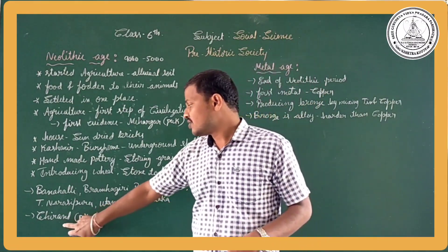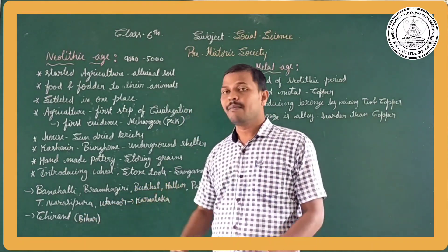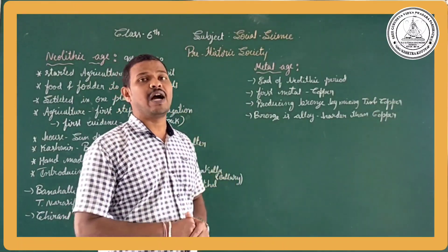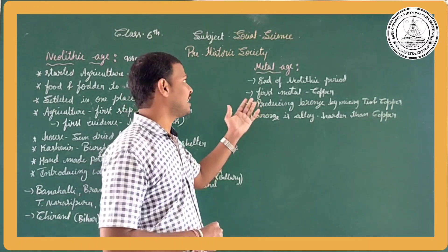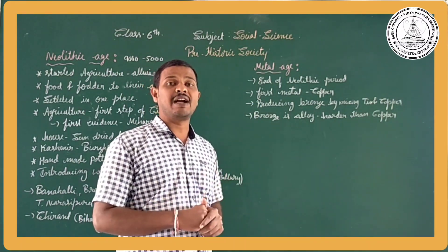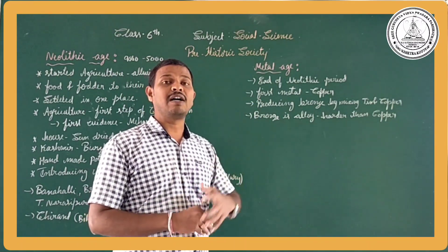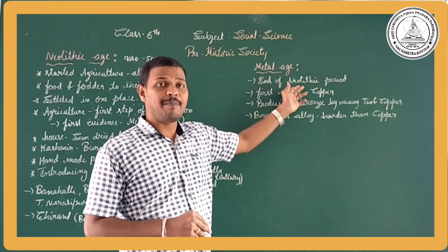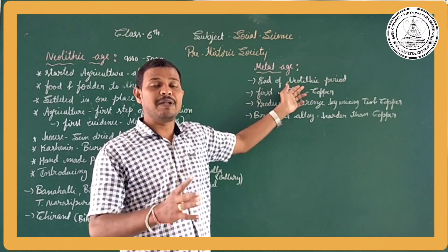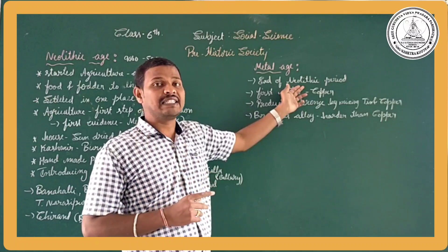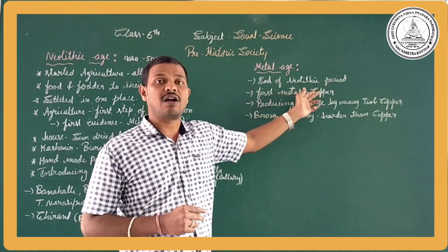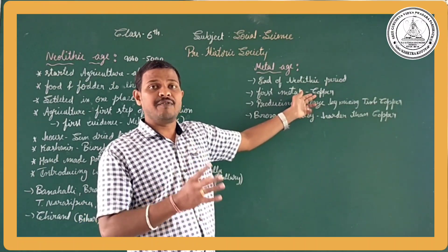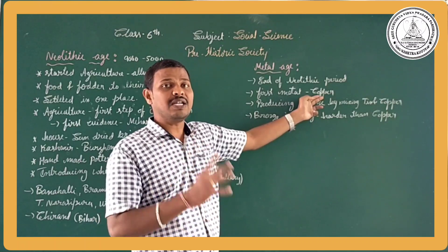These are the important sites specially from Karnataka. Like this way we found Chiran in Biha. These are the important aspects we got from the Neolithic age. Then there is also the Metal age. The name indicates the metals — at the end of the Neolithic period almost all people used metals. The first metal we know is Copper, which is found at the end of the Neolithic age.